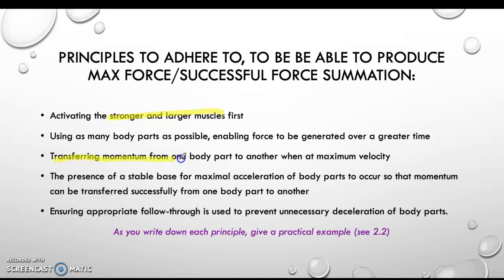You then transfer the momentum from one body part to another at maximum velocity. There's no point twisting with your legs and torso, then stopping, then continuing with your shoulder and arm — you need to make sure you're doing it in the right timing. You then move from stronger and larger muscles to smaller muscles. The last muscles you activate in a throw are your shoulder, arm, and fingertips as you flick the ball off your fingers. So we've gone from really large body parts — legs, torso, back, shoulder — down to biceps, triceps, fingertips. You also need to make sure you do an appropriate follow-through.